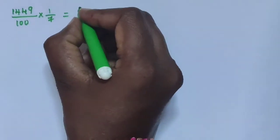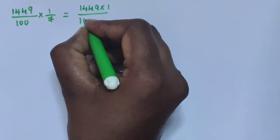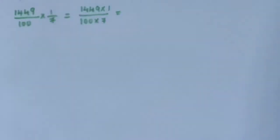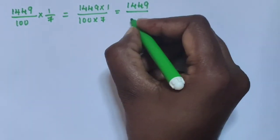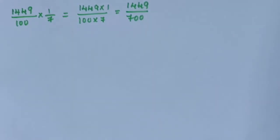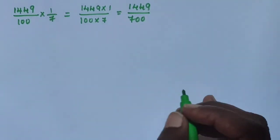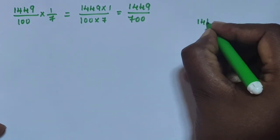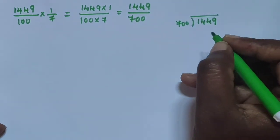Multiply these two fractions: 1449 into 1, divided by 100 into 7. That gives 1449 divided by 700.